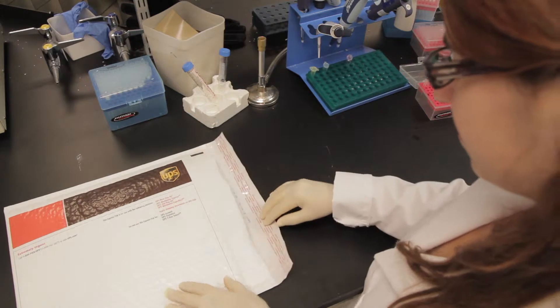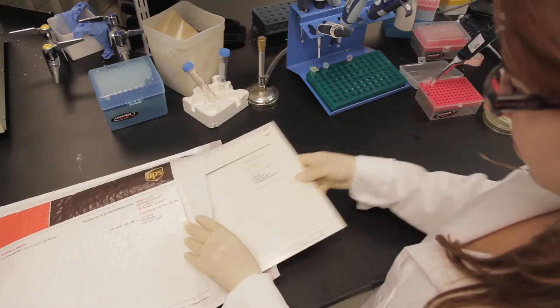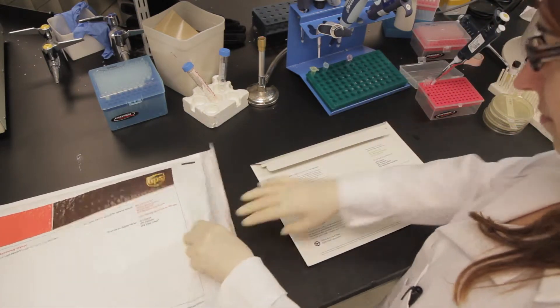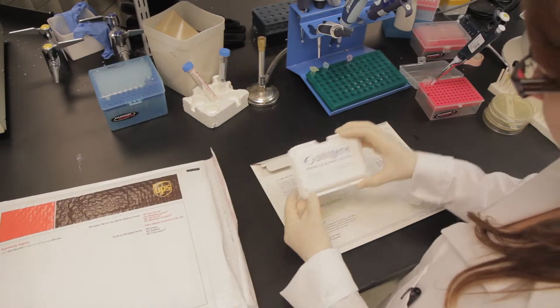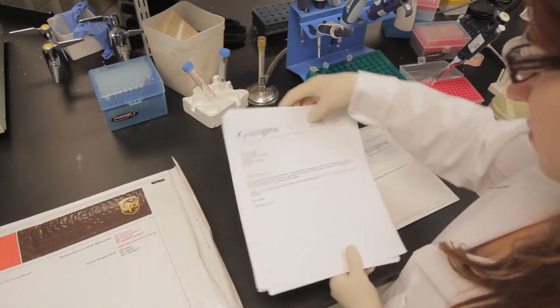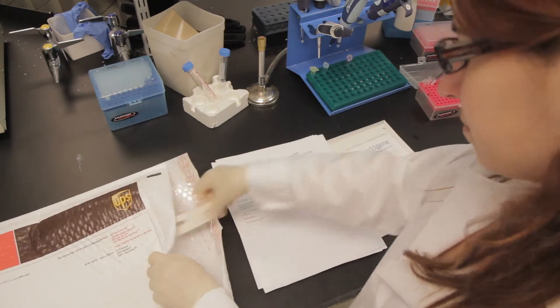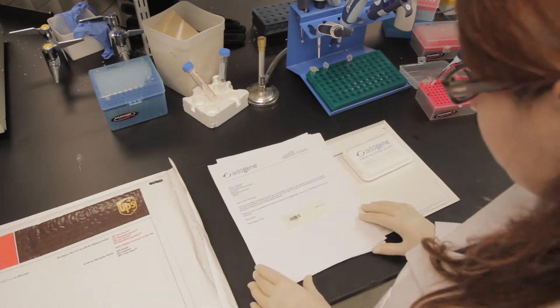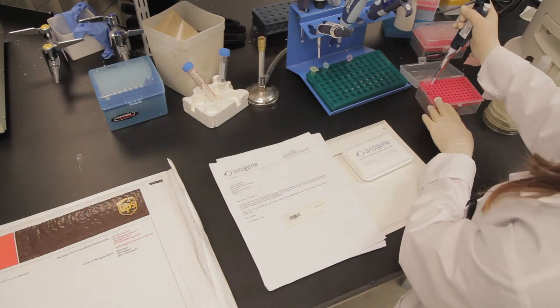Once you have entered your deposit online or requested a deposit kit, AddGene will send you a package consisting of shipping materials, a plastic shipper for returning Eppendorf tubes, any paperwork that needs to be signed or filled out, and barcoded labels if you entered your cloning data online.